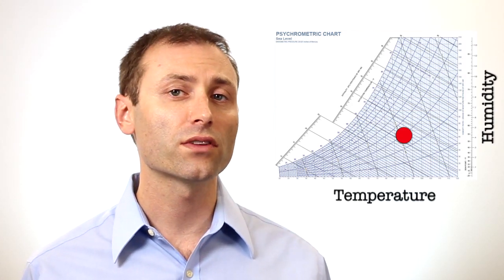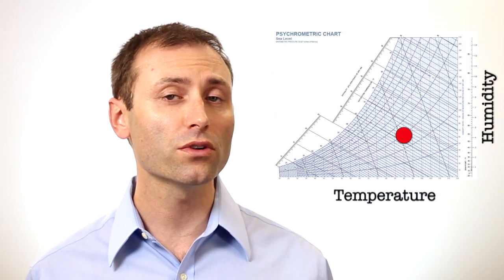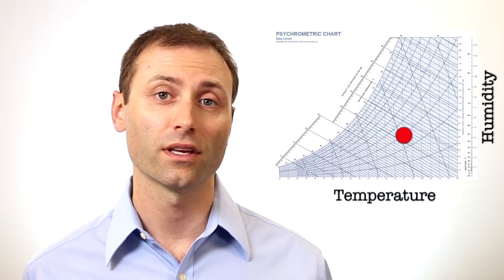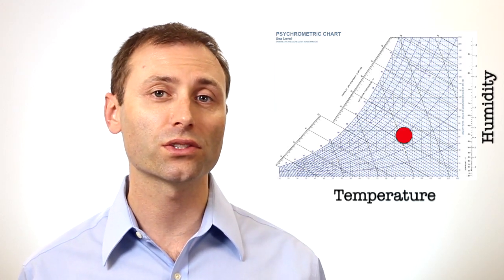Here's an important point. The temperature and humidity in a room are always changing. In other words, the dot is always moving on the chart.